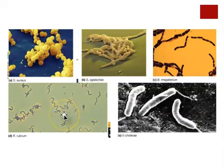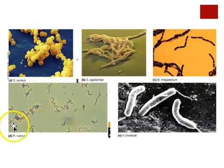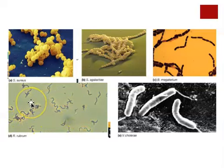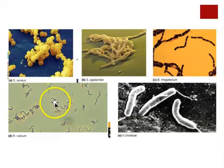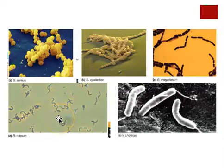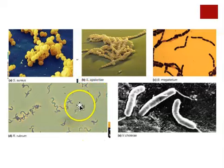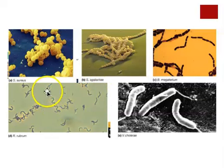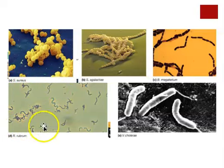Over here, we have a spiral-shaped organism. You can see that this organism is helical — it's twisted. This happens to be a spirillum. It looks like it has lots of twists and turns, so you might think it was a spirochete, but if you look at the other cells on this slide, they're not nearly as twisted as this one in the center. This is the spirillum type of shape — helical, but not nearly as twisted as a spirochete.